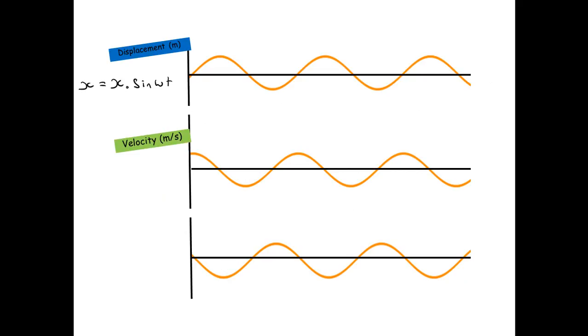Then we've got velocity in meters per second against time and that's the differentiation of the top equation with respect to time. And we get v equals omega x0 cos omega t.